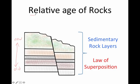Now this gives us the relative age. What we're doing is relating one layer to another — we know that this one is oldest and this one is newest. We don't know the exact or absolute age, but we know in general which one was here first.